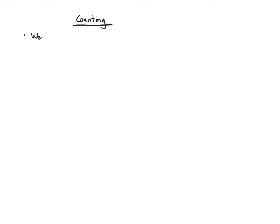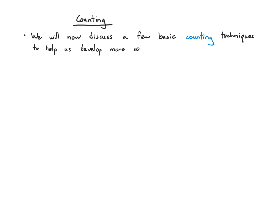Let's talk a little bit about counting. We're going to need a few basic counting techniques because they show up in more complex probability models. We're usually not going to be developing these models on our own, but it's useful to know where some of the terms come from just to interpret and build intuition.